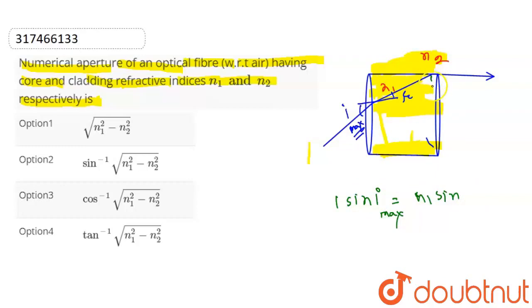If you see the triangle, this is theta. This is pi by 2 minus theta. Then sin i maximum is equal to n1 times cos theta.